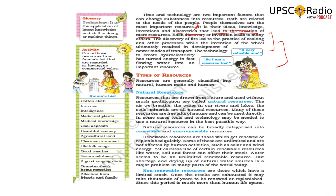Natural resource and artificial resource — let us list the types. Resources that are drawn from nature and used without much modification are called natural resources. The air we breathe, the water in the rivers, and the soils and minerals we use — even these you can directly access. We don't need to modify or get government permission for natural air.